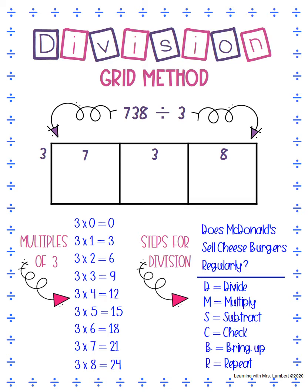Now that we have it all set up, we're gonna look at our steps and start at the top. D for divide: we're gonna do 7 divided by 3. If we look at our multiples we want to find the closest answer without going over — 3×2=6 is the closest, so 3 goes into 7 two times. Next step is multiply: 2 times 3 is 6. Then subtract: 7 minus 6 is 1.